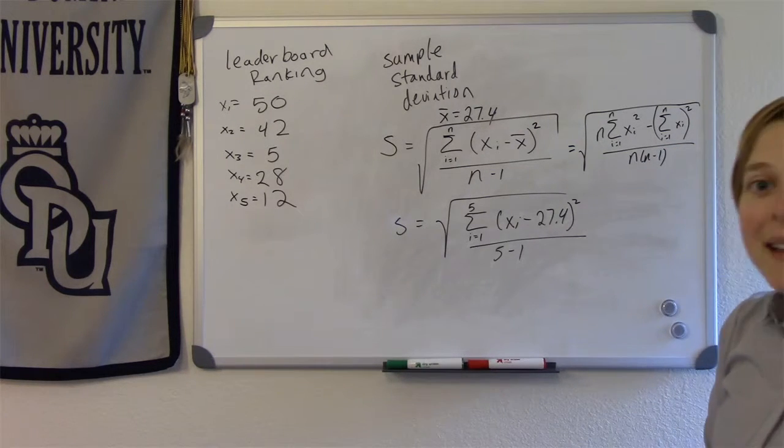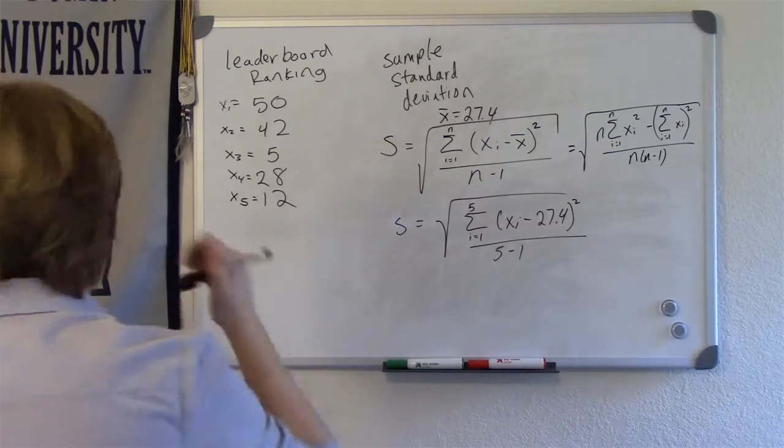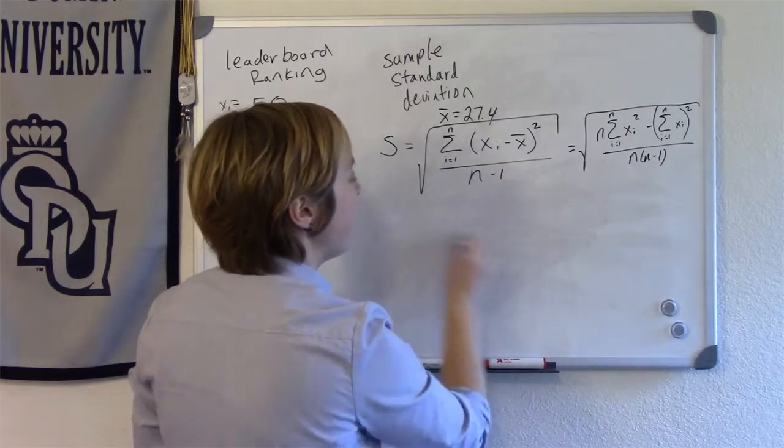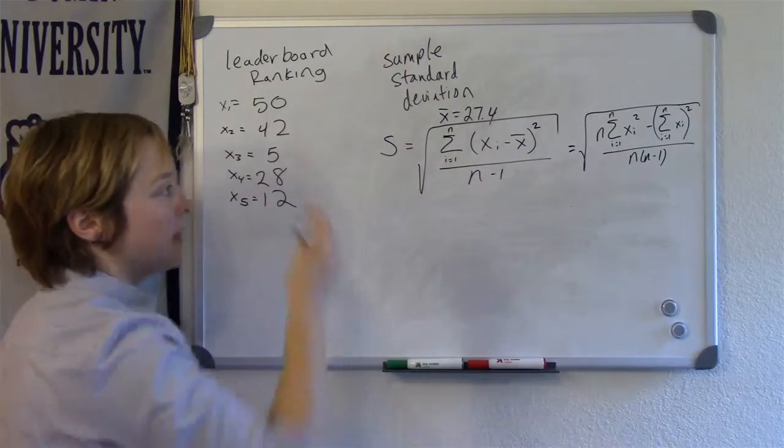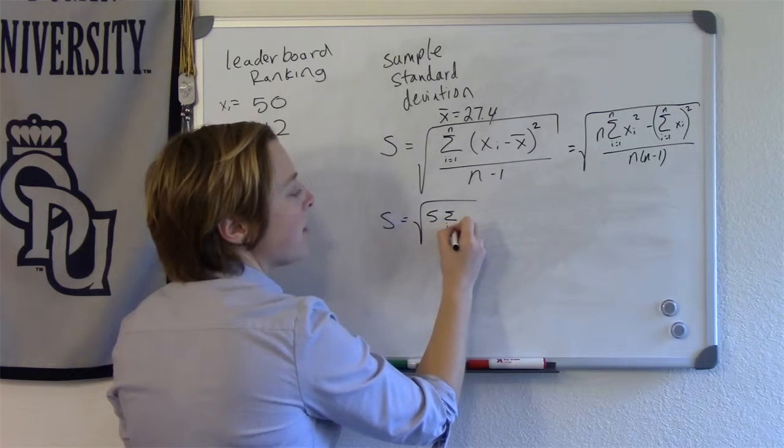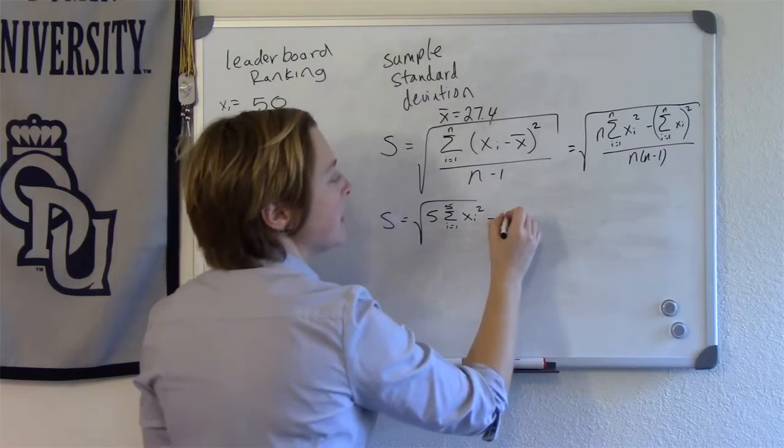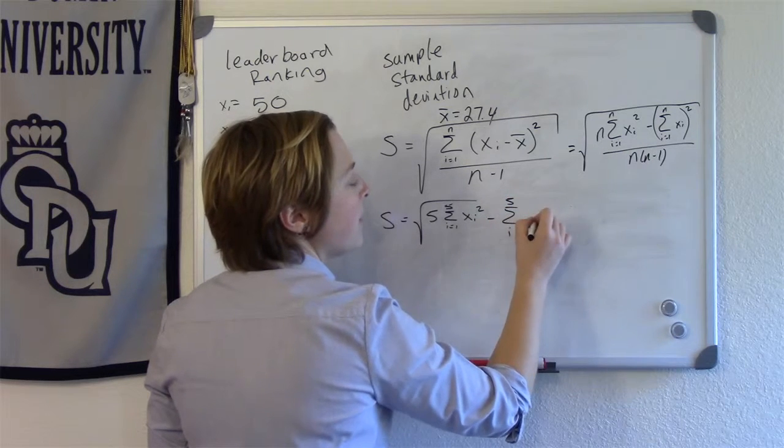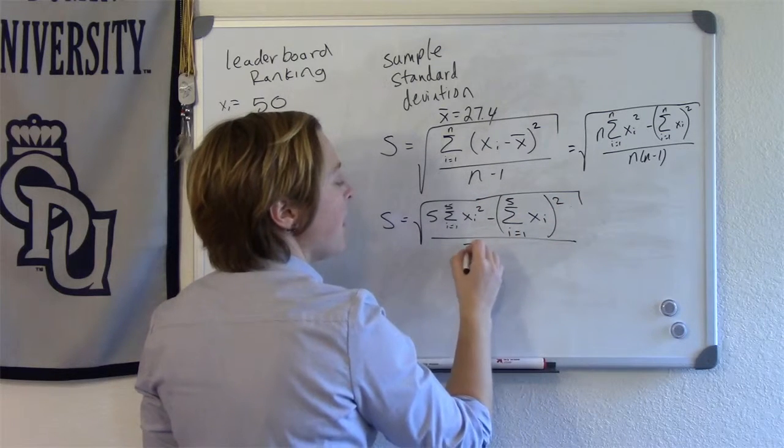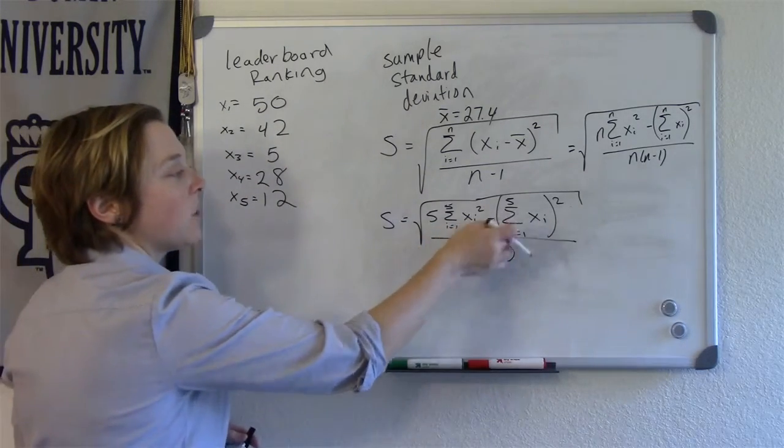So it's n times the sum from i equals 1 to n of xi squared minus the sum from i equals 1 to n of xi, all squared, divided by n times (n minus 1). Mathematically, you can show that these two are equivalent. Now, if I were to calculate using this formula, it's way easier. So I want to go ahead and do that. My sample size is 5. All right. So I just need to know what's the sum of xi squared and what's the sum of xi.